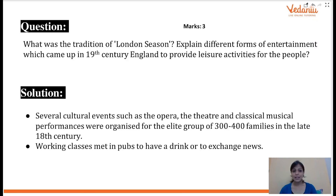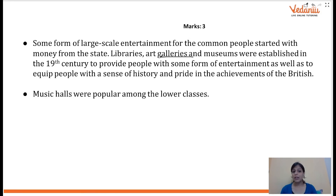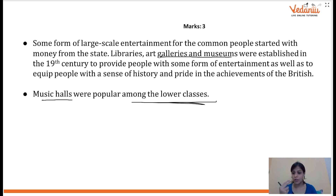To summarize entertainment forms: the London Season consisted of events organized annually for wealthy families. The working class met at pubs, exchanged news, visited art galleries and museums. Music halls were especially popular among lower-class people. With libraries and museums, people could relate to their past and feel a sense of pride about historical achievements.